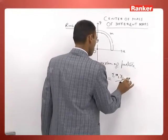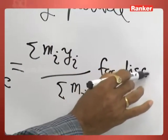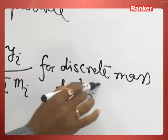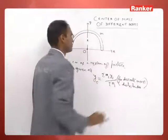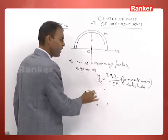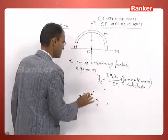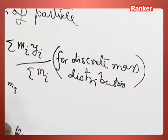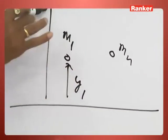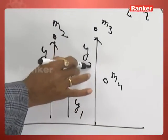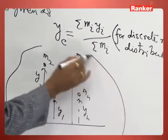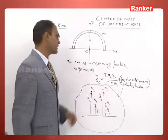This formula is valid for discrete mass distribution — just like several point masses or several particles that do not touch each other: mass m1, mass m2, mass m3, and so on, having y positions y1, y2, y3, and so on up to y_n. The y coordinate of the center of mass of this discrete mass distribution can be calculated by this formula.